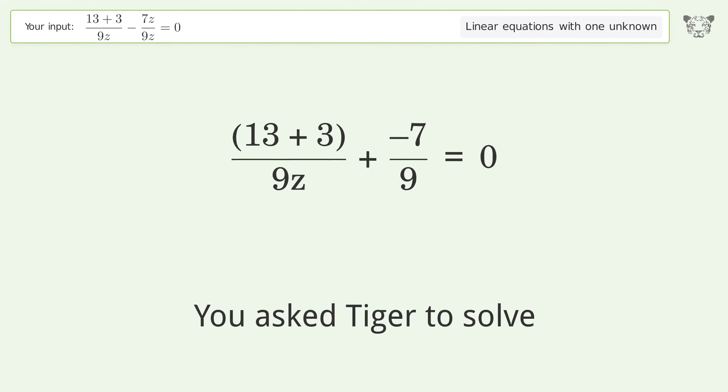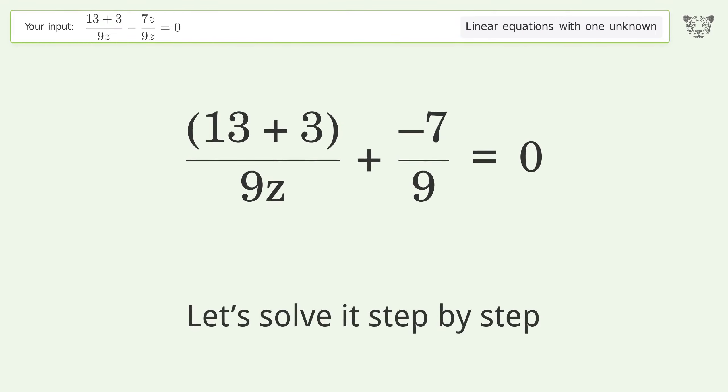You ask Tiger to solve this. It deals with linear equations with one unknown. The final result is z equals 16 over 7. Let's solve it step by step. Simplify the expression. Simplify the arithmetic.